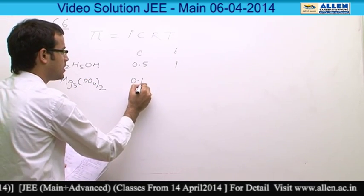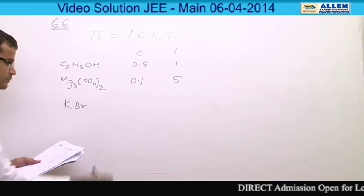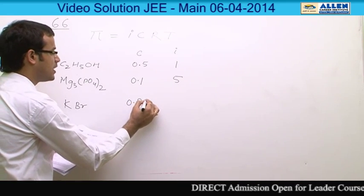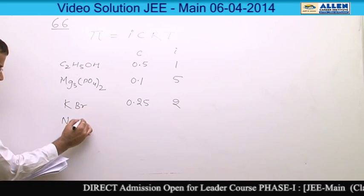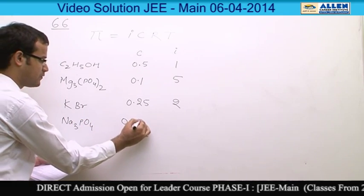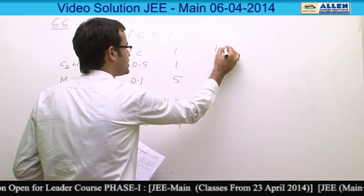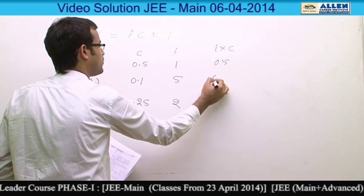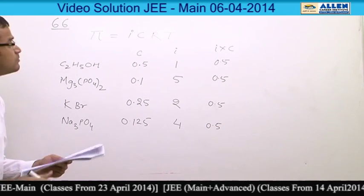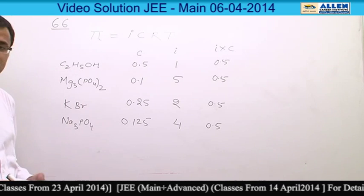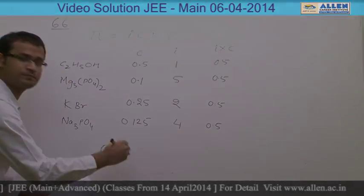For KBr, given concentration is 0.25 and van't Hoff factor is 2. For Na3PO4, given concentration is 0.125 and van't Hoff factor is 4. Therefore i multiplied by c is 0.5 for all compounds. All have the same value of i multiplied by c, therefore all have same osmotic pressure. Therefore option 3 is correct.